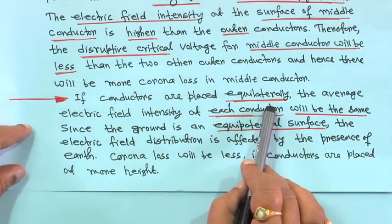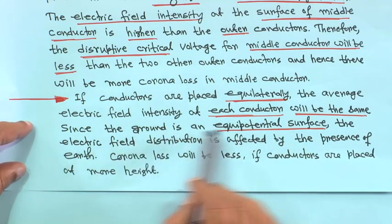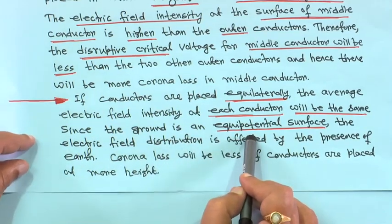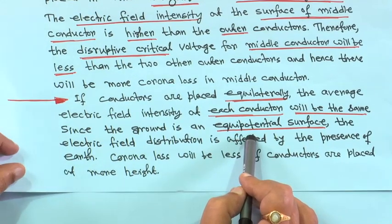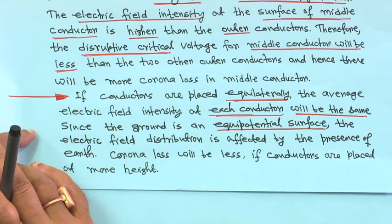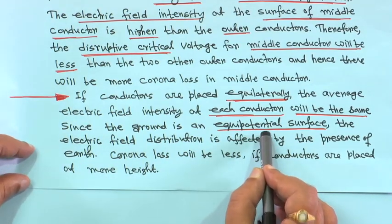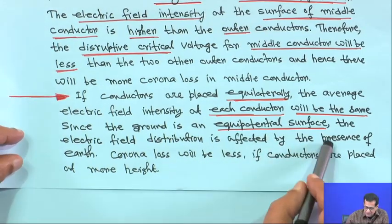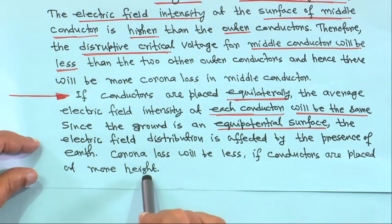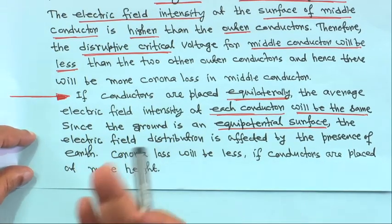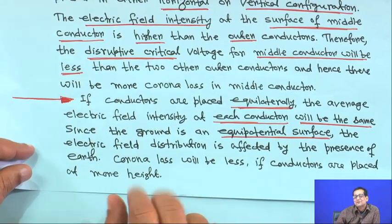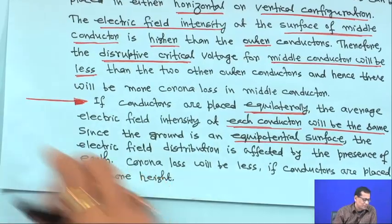If conductors are placed equilaterally in a triangle, the average electric field intensity at each conductor is the same. The ground is always an equipotential surface, and the electric field distribution is affected by the presence of the tower. Corona loss will be less if conductors are placed at greater height, but increasing tower height increases construction cost, so an optimum design is required.